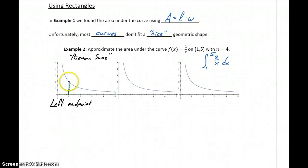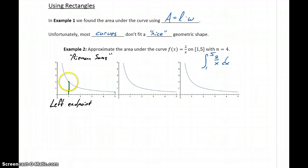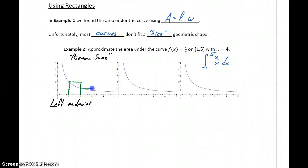The left endpoint method says we're going to start with the left endpoint of each interval. Our first interval begins at 1, and we draw a line up until we hit the function, then square that off into a rectangle. With n = 4 subintervals, we want 4 rectangles. So our first rectangular region stretches from 1 to 2, then at 2 we have the left endpoint for the next subinterval. We continue repeating that process until we have all four rectangular regions.